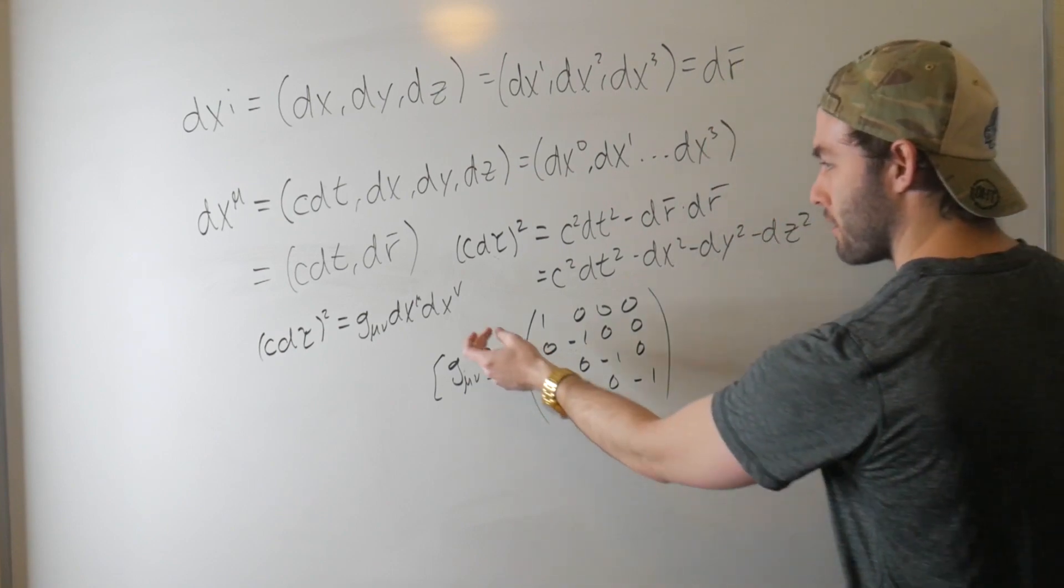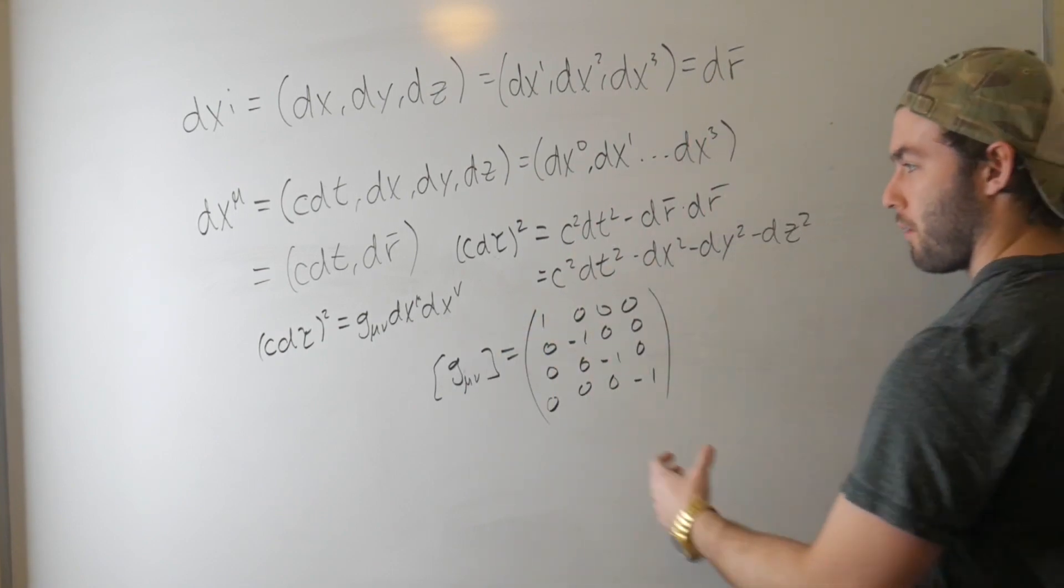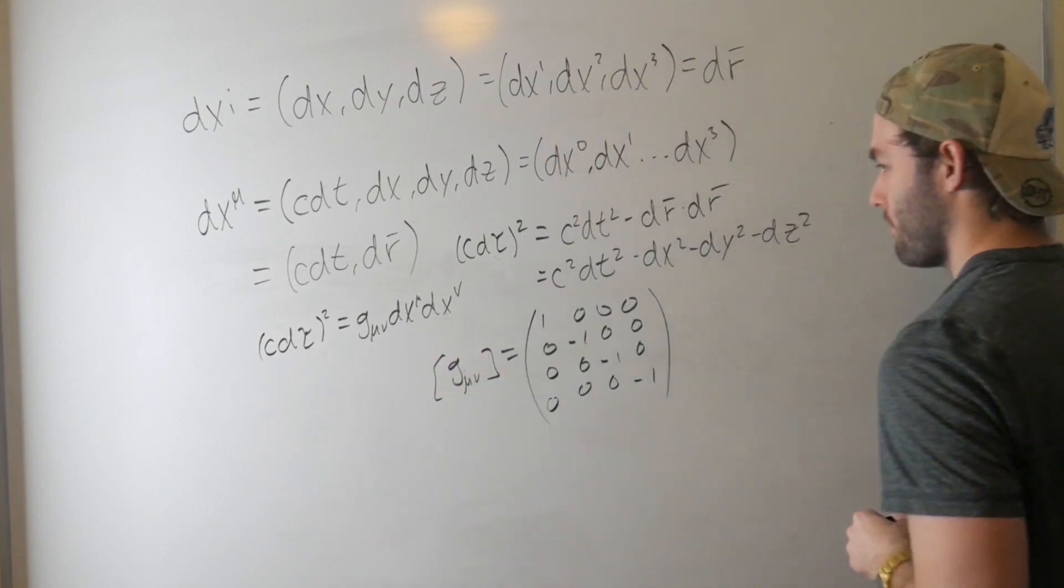If we multiply this out by our coordinate displacements, then we get the correct square of the proper time. Cool, so that worked.